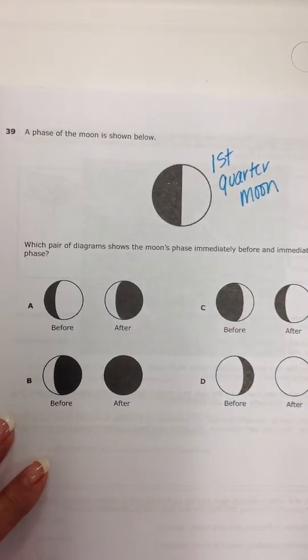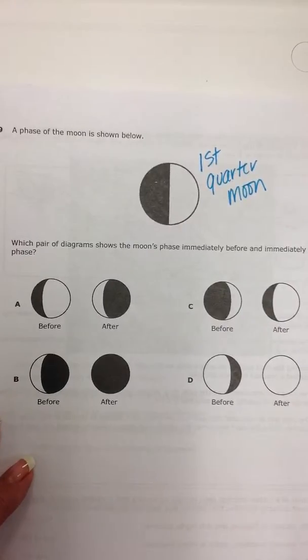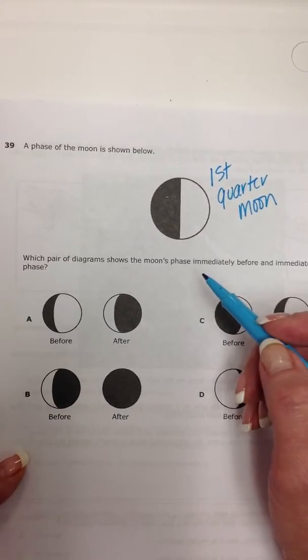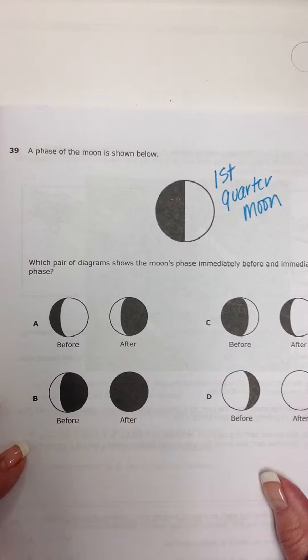And then it says, which pair of diagrams shows the moon phases immediately before and immediately after this phase? Well, let's think about this because my recommendation would be to draw the moon phases just on your own